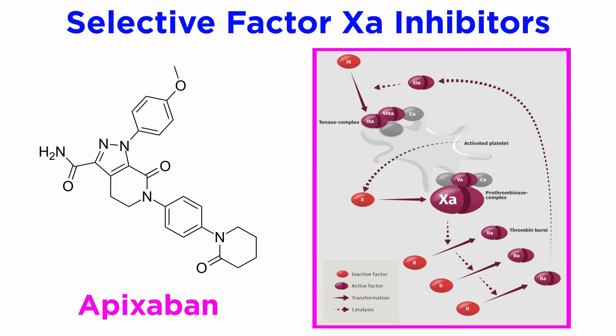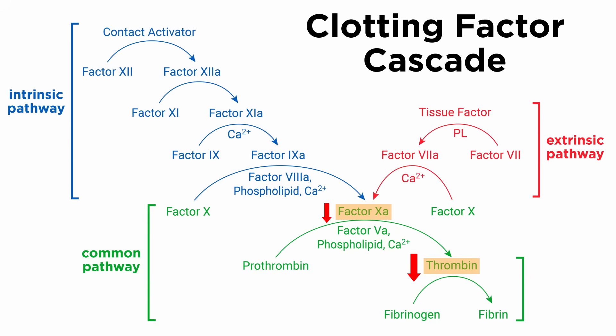Finally, selective factor Xa inhibitors, such as apixaban, selectively inhibit factor Xa, which leads to reduced conversion of prothrombin to thrombin, which in turn reduces platelet aggregation indirectly through reduced protease-activated receptor activity and thrombin-induced conversion of fibrinogen to fibrin. Although the clotting cascade is quite complex and involves many steps, the important aspects to remember revolve around the endpoints of thrombin and fibrin generation, and how different drugs pharmacologically interfere with critical steps in the cascade.